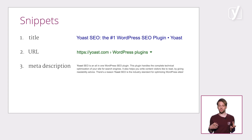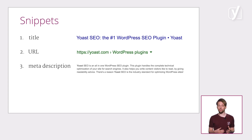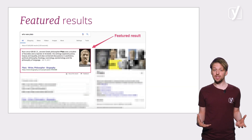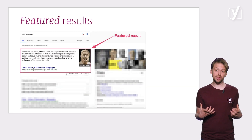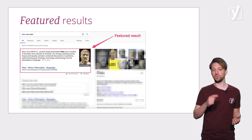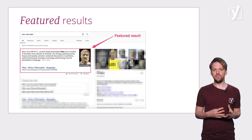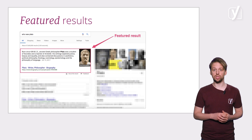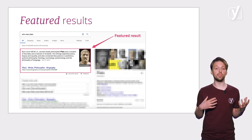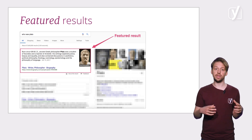Sometimes there's more to these snippets than just these three elements. In that case, we call the snippet a rich snippet. You'll learn more about rich snippets and other rich results later in this course. Sometimes a snippet is set apart from the regular search results all the way at the top of the page — this is called a featured snippet. A featured snippet is a highlighted search box that answers the question you type into the Google search bar, and often appears as a paragraph or a bulleted list, accompanied by an image.